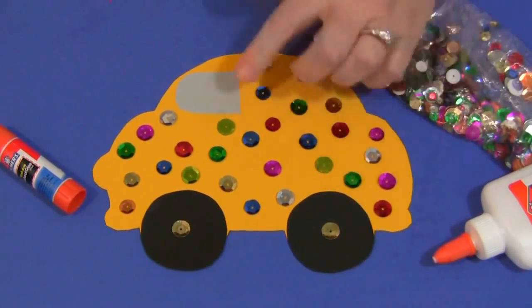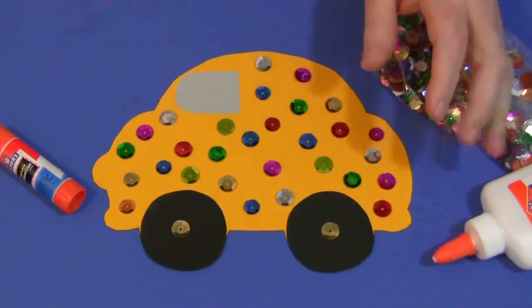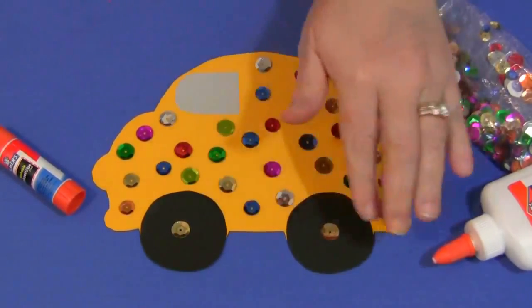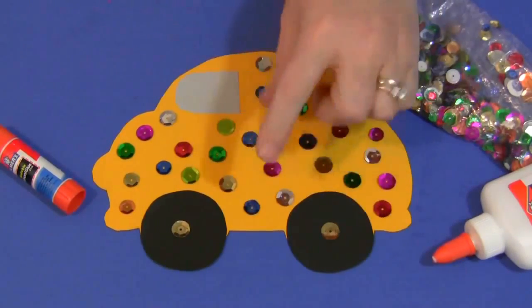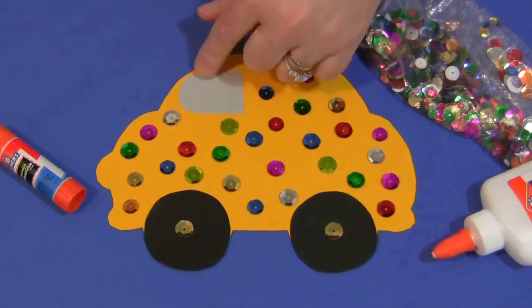I used yellow, but you can use whatever colors you want. Two circles are cut out for the wheels. The children glue those on, and then a window shape for the car.